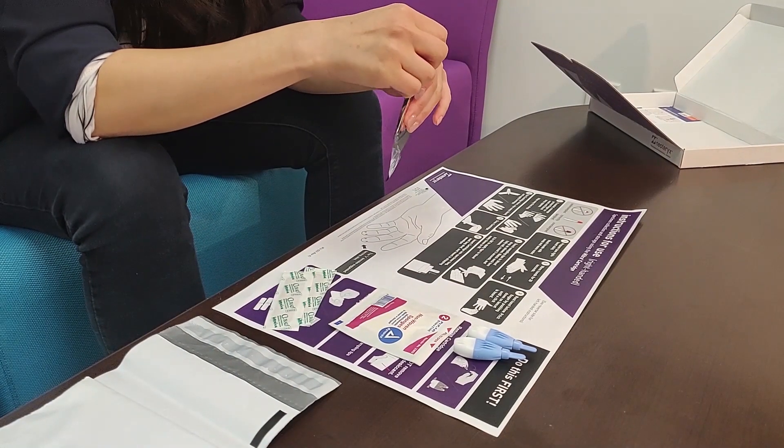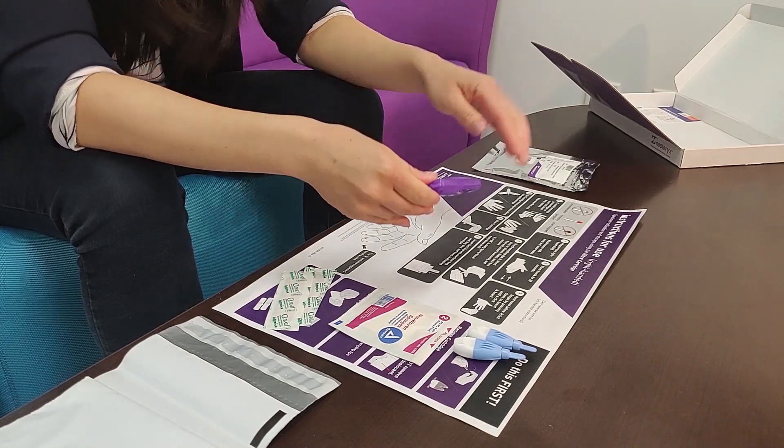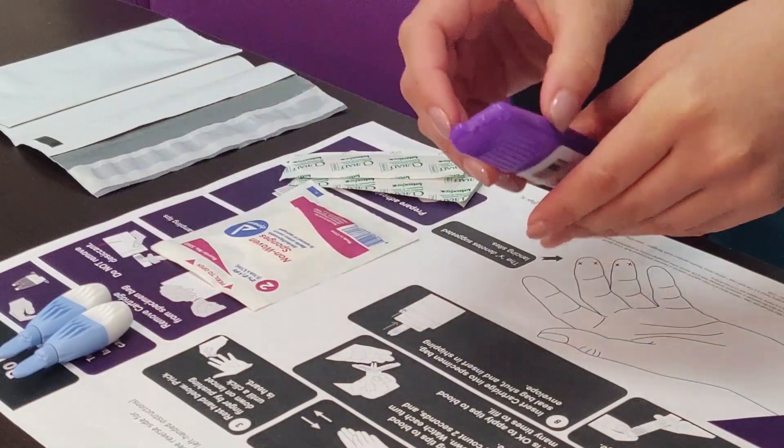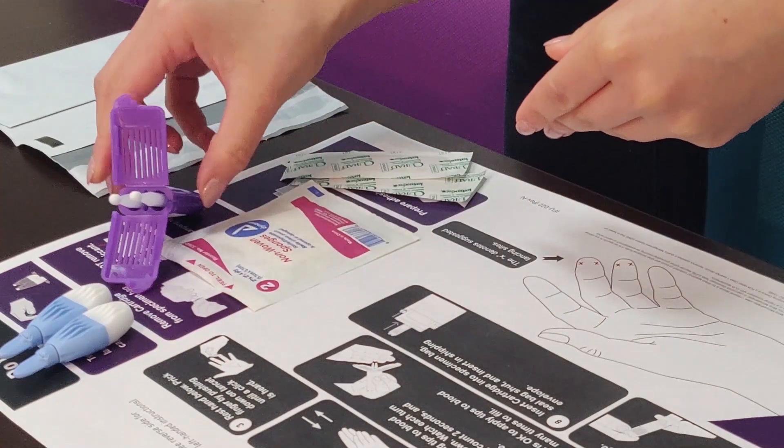First, remove the meter device from the specimen bag. Do not remove the desiccant; it should stay in the bag. Next, open the meter device to expose the sampling tips. Do not remove the microsamplers from the cartridge.